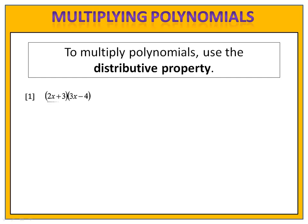We have 2x plus 3 times 3x minus 4. We're going to distribute the 2x and then we're going to distribute the 3. Let's begin with the 2x — we'll take that and distribute it into the 3x minus 4.